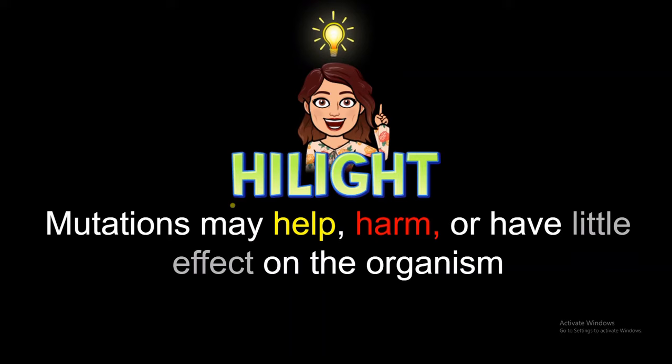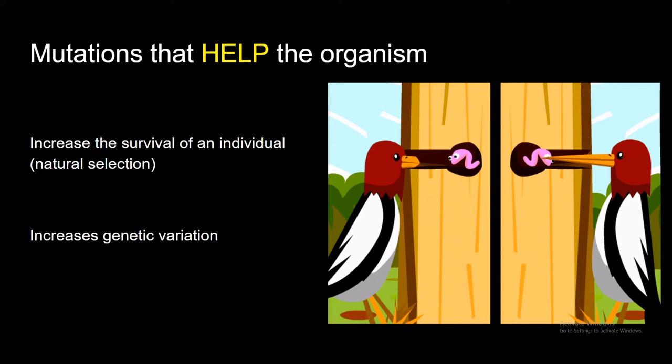There's something really important that we have to talk about. Mutations can either help, harm, or actually have no effect on the organism. Mutations that help the organism can increase the survival of an individual. Remember with natural selection? If back then there was a bird that had a very short beak and it needed to get this worm, the bird with the short beak would actually die over time because it can't get the food. But if there was a mutation that all of a sudden made the offspring get a longer beak, then the new offspring could survive and favor the reproduction of birds with large beaks. But it was all caused because of this mutation. And it also increases genetic variation.